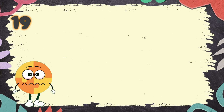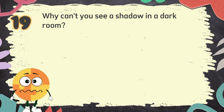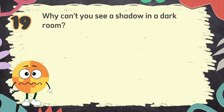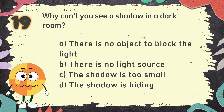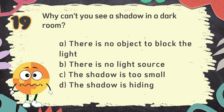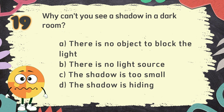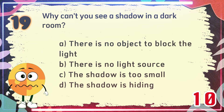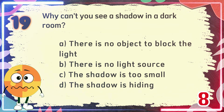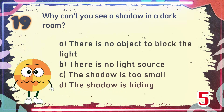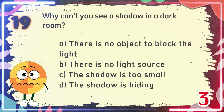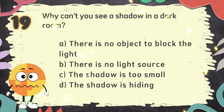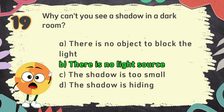Number 19. Why can't you see a shadow in a dark room? The choices are: A. There is no object to block the light, B. There is no light source, C. The shadow is too small, D. The shadow is hiding. The correct answer is B: There is no light source.